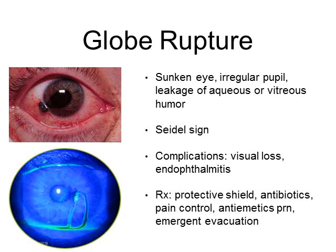You are looking for a sunken eye, irregular pupil, or teardrop pupil as shown in the picture to the left. Leakage of aqueous or vitreous humor — look for Seidel's sign, which is shown in the bottom picture. It's the streaming and pooling of fluorescein by aqueous humor from inside the eye. Complications of this condition include visual loss and endophthalmitis, which is infection of the globe. Treatment is really limited in the field.